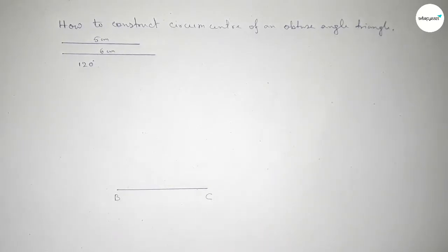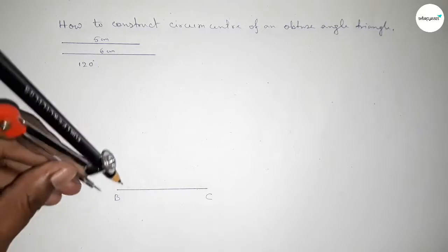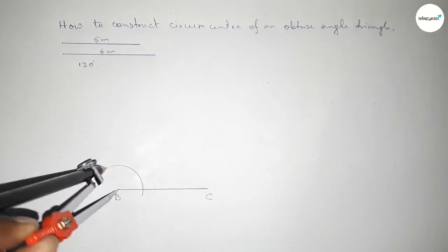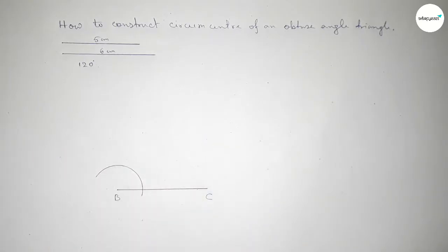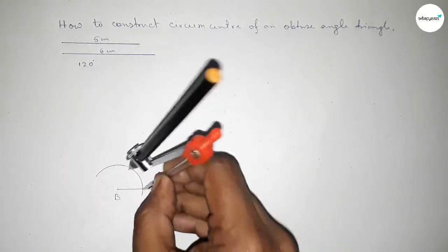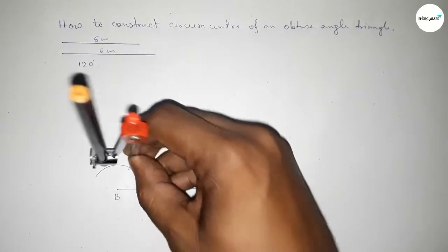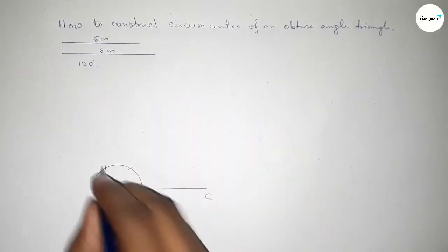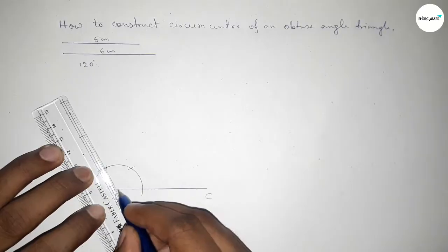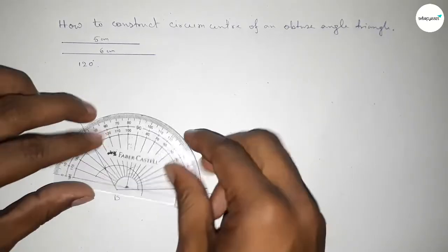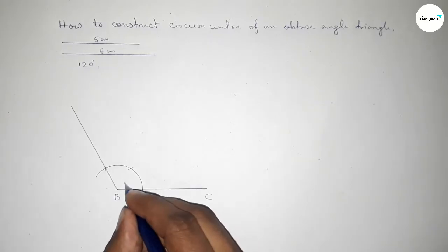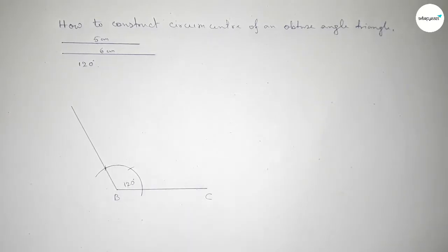Taking here point B and here C. Now we have to draw a 120 degree angle on point B. Drawing an arc, putting the compass here and cutting here, then putting the compass here and cutting here, so both curves intersect at a point. Joining this — so this is perfectly a 120 degree angle, and this is an obtuse angle.